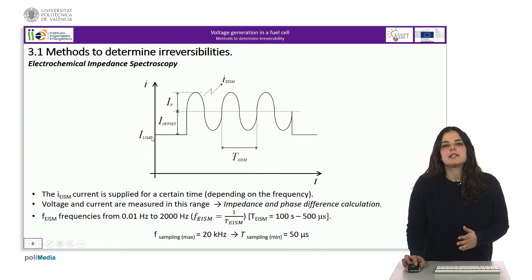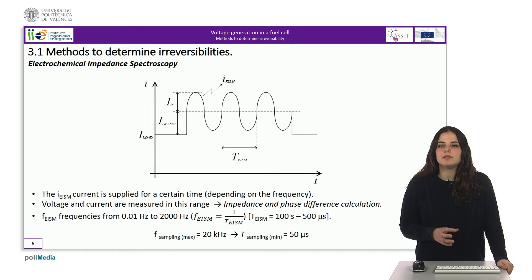The current consumed by the EIS meter device must have a particular characteristic. It must have a positive offset greater than the amplitude of the sinusoidal signal I P, so that no current can ever be drawn from the fuel cell. In addition, the amplitude of the current must not be so great as to remove the fuel cell from its point of operation. In other words, the amplitude of the sinusoidal signal will be much smaller than the value of the direct current I load. The time this current is applied depends on the frequency being used. Since for frequencies lower than 0.01 hertz, its period is 100 seconds, and in order to ensure a stable measurement, the current signal must be applied for a sufficient number of periods.